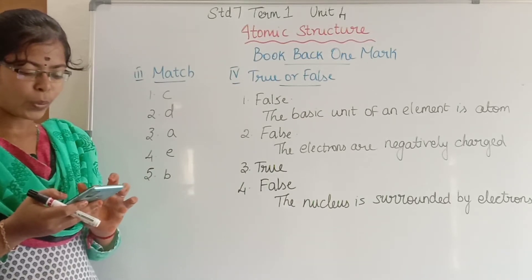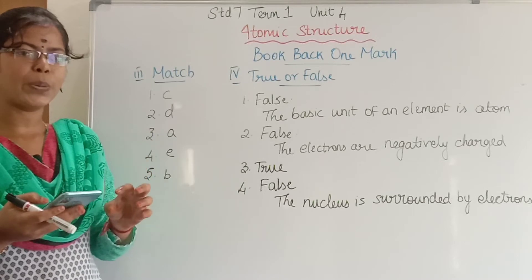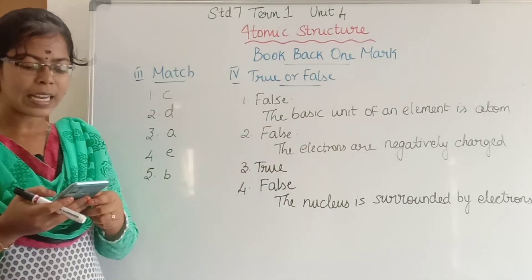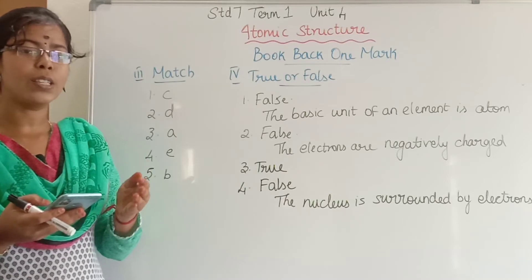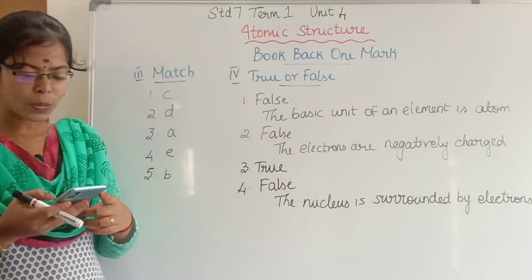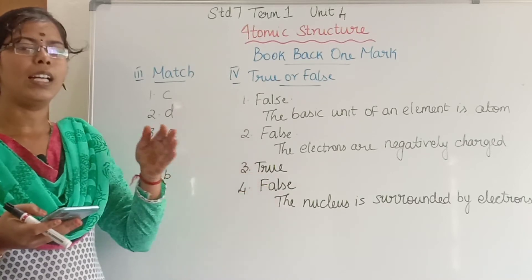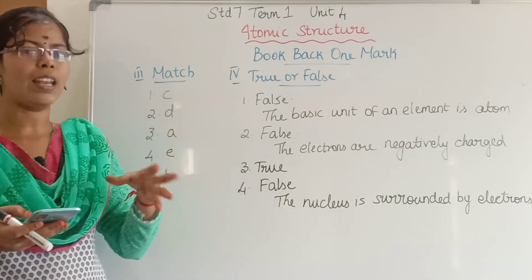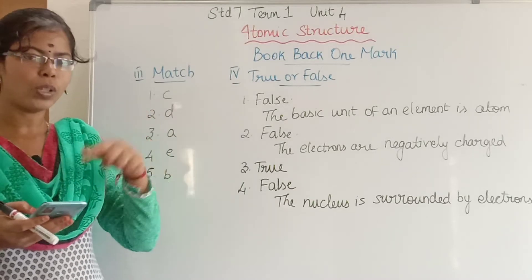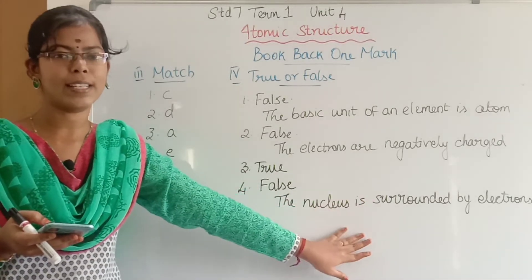Fourth section: state true or false. If false, give the correct statement. First: the basic unit of an element is molecule — false. The correct answer is: the basic unit of an element is atom. Second: electrons are positively charged — false. The correct statement is: electrons are negatively charged. Third: an atom is electrically neutral — true. Fourth: the nucleus is surrounded by protons — false. The correct statement is: the nucleus is surrounded by electrons.